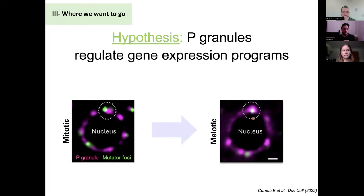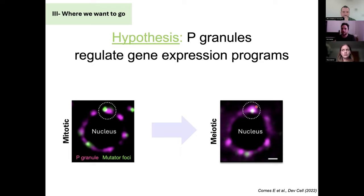Overall, although this is very correlative, these observations suggested the possibility that C. elegans germline condensates contribute to regulate gene expression programs, and that the P. granule is the site of regulation connecting small RNA biology to transcriptional silencing in the nucleus. This is one possibility — our working hypothesis — and it's one of the directions I would like to take.